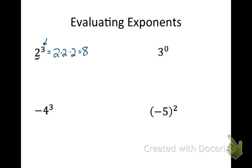In your calculator you'll have an exponent button — ask your teacher if you need help finding it. But you can always just put in your calculator 2 to the third and you'll get out 8, as opposed to multiplying 2 together 3 times. This next one I want you to try in your calculator. If you put 3 to the 0 you're going to get out 1. We'll learn about 0 later — it's a special case.